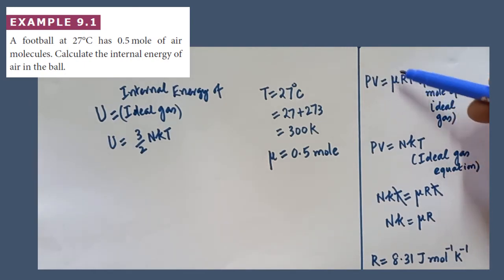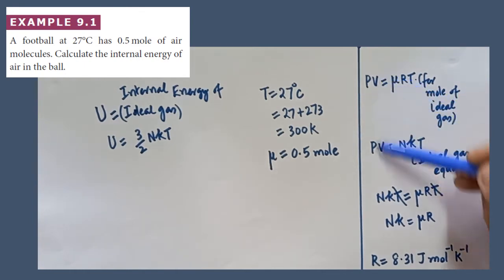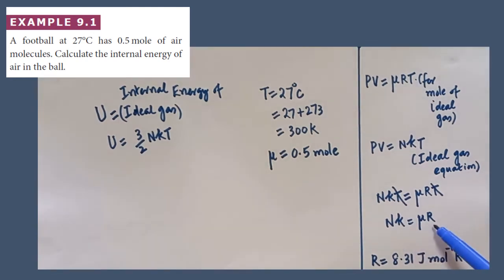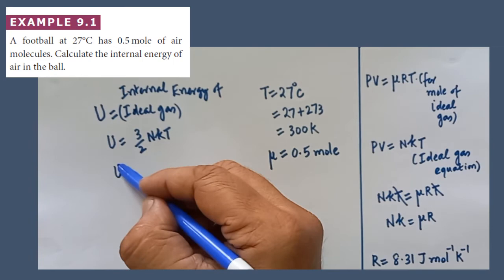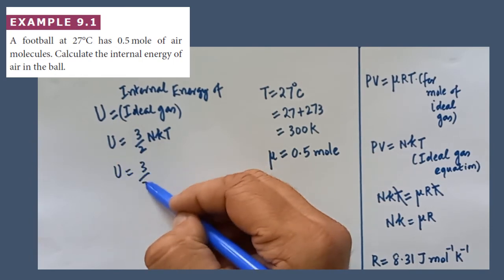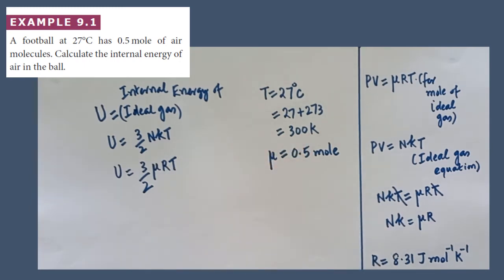we can write the ideal gas equation as PV is equal to μRT. This is one of the ideal gas equation. Another equation is PV is equal to NKT. On either side, LHS both are same. Therefore, RHS can be equated. NKT is equal to μRT. T can be cancelled. Therefore, NK will be equal to μR. So here NK can be replaced. So internal energy is equal to 3 by 2 μRT can be written.